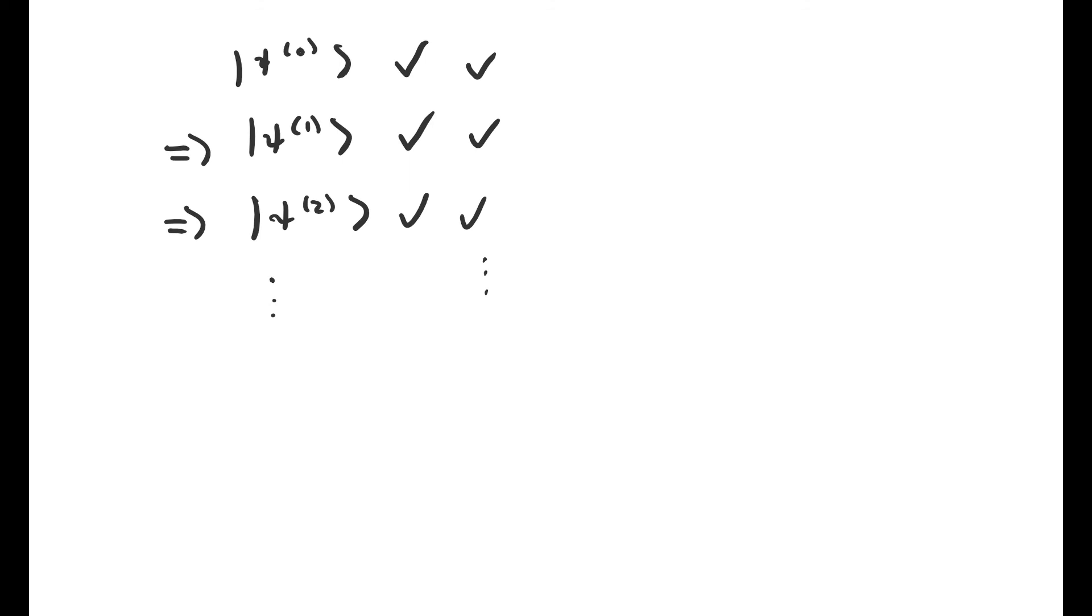You may remember that a two-dimensional vector space over the real numbers is isomorphic to the plane. That means that we can visualize these vectors as arrows on this piece of paper. So note what's happened here because this is quite incredible.